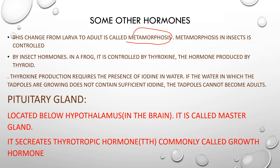This hormone is secreted by the thyroid gland. Metamorphosis is controlled by the thyroxine hormone, which is produced by the thyroid gland. For thyroxine production, iodine must be available in the water. If the water in which tadpoles are growing does not contain sufficient iodine, then tadpoles cannot become adults. If iodine is not present in the water, the growth of the tadpoles will be inhibited.